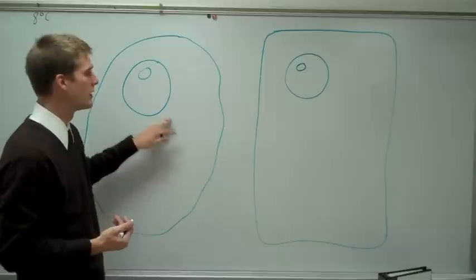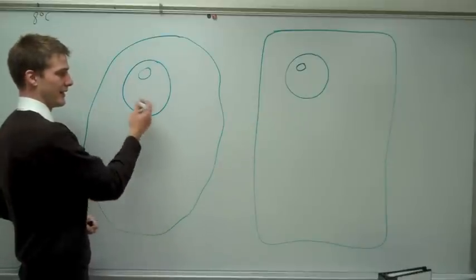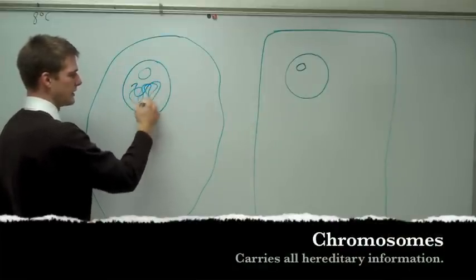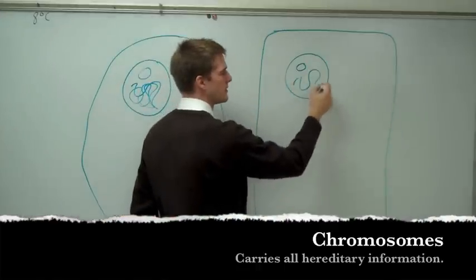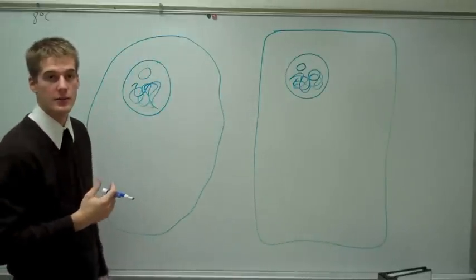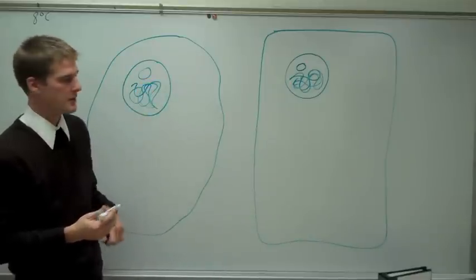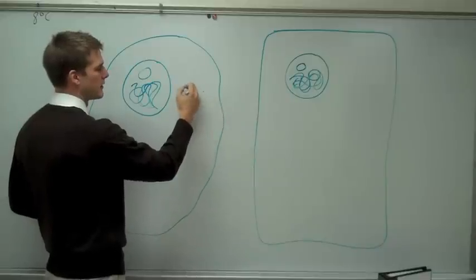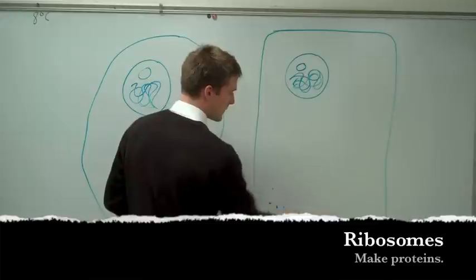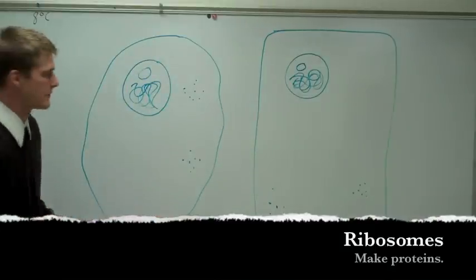The cell membrane controls things going in and out of the cell in both. The nucleus controls the cell activities. The nucleolus makes ribosomes — ribosomes are important. Also within the nucleus we have DNA. The DNA inside your nucleus is in the form of chromosomes — unwound chromosomes look kind of like that. The nucleolus makes ribosomes, which can either be free-floating within the cell or attached. Ribosomes make proteins.